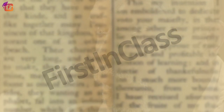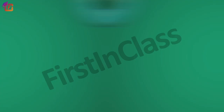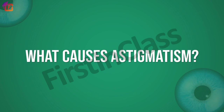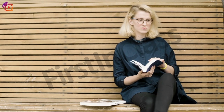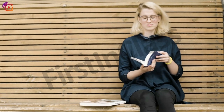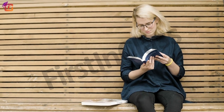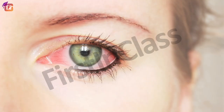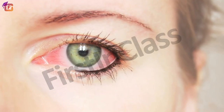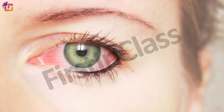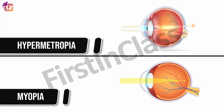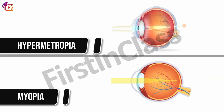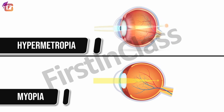What causes astigmatism? It is usually inherited from ancestors but develops in later stages of life. Another factor is an eye injury resulting from any kind of accident.